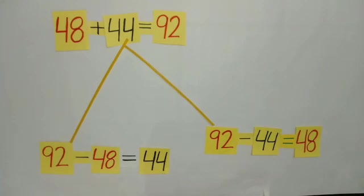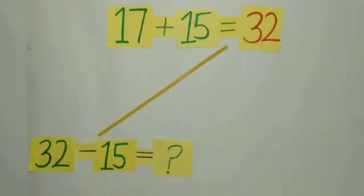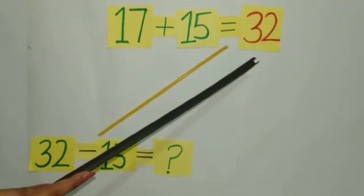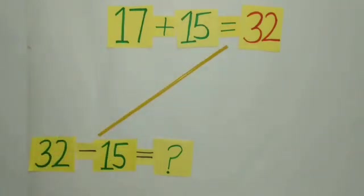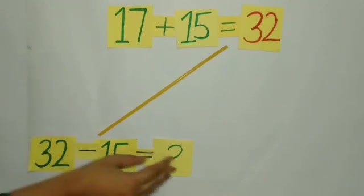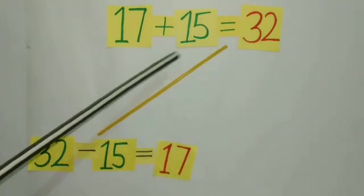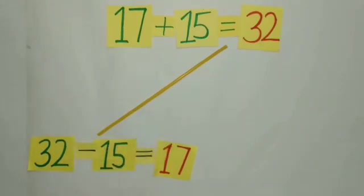Students, you know this type of question can be asked in the Punjab Achievement Survey — PAS. For example: if we get 32 after adding 17 and 15, then what will we get after subtracting 15 from 32? We get 17, because after subtracting the second number from 32, we will get the first number 17.